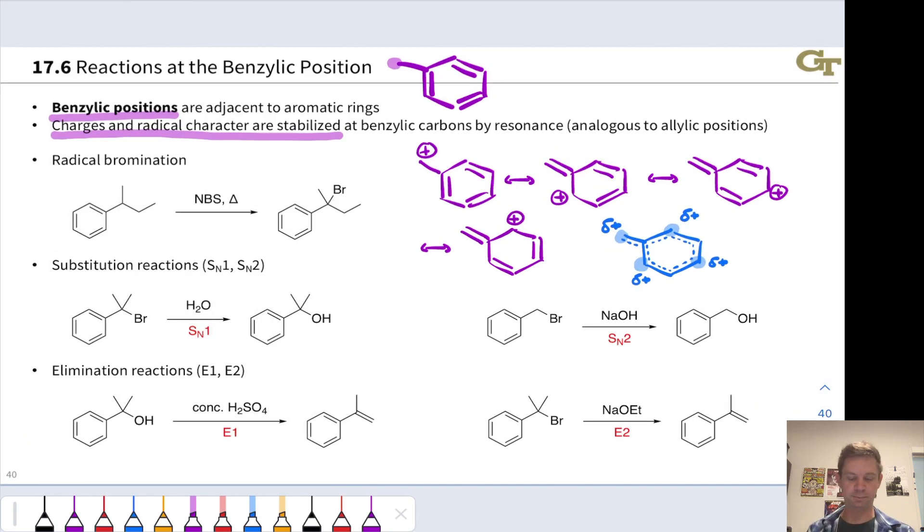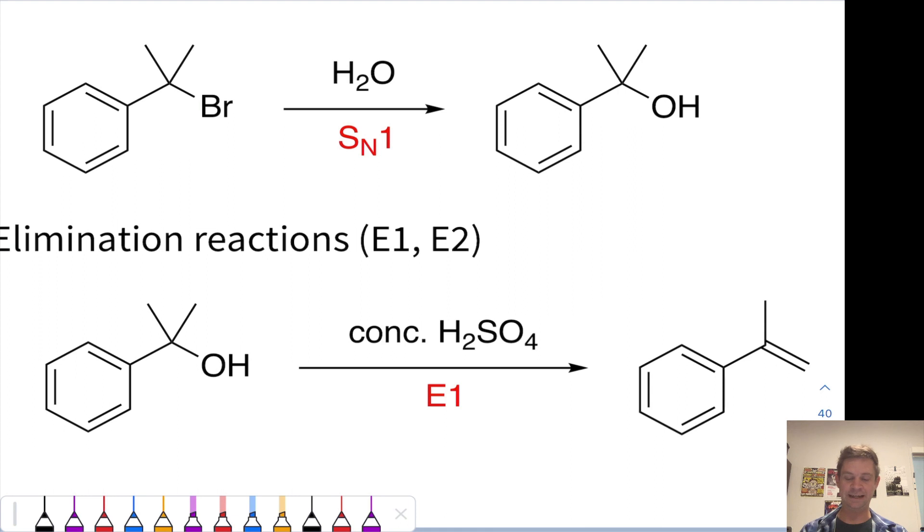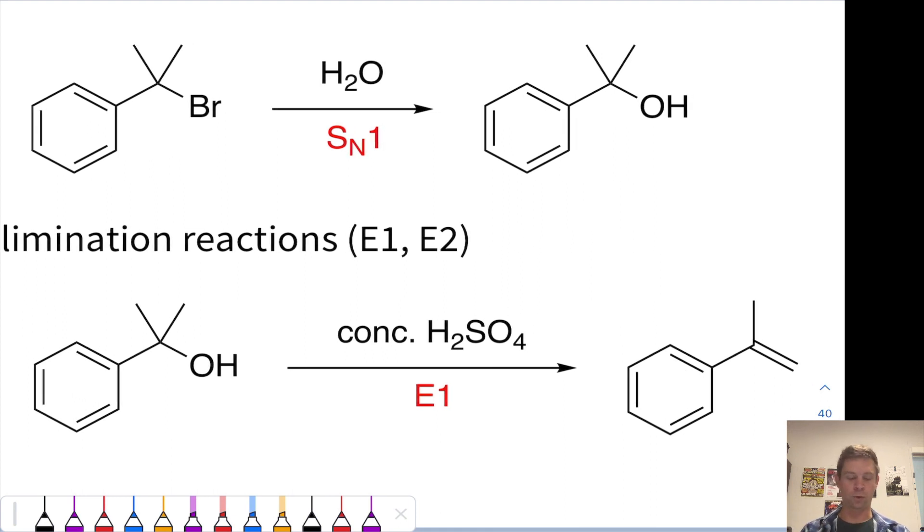Elimination reactions at benzylic positions are also heavily favored. So for example, this case in the bottom left is an E1 reaction, where concentrated H2SO4 protonates the hydroxyl group, and water is lost to put a cation right here.